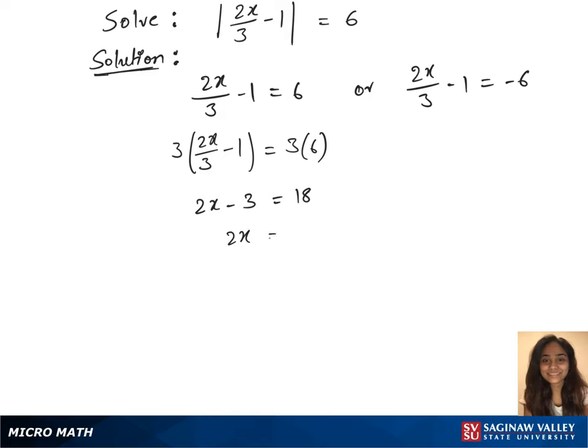Add 3 on both sides which gives us 2x equals 21. In our last step we have x equals 21 over 2.